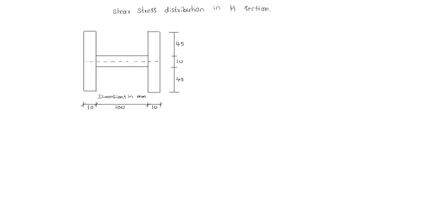Now, what is the distribution? First, we will find what is the moment of inertia I. I equals, for the two webs: 2 into 10 into 100 cube by 12, plus for the central flange, that is the horizontal member: 100 into 10 cube by 12. That is equal to 1.675 into 10 power 6 mm to the power of 4.